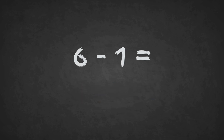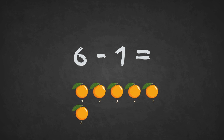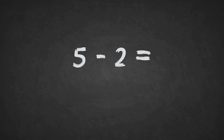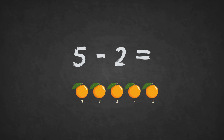6 minus 1 equals 1, 2, 3, 4, 5. The answer is 5. 5 minus 2 equals 1, 2, 3. The answer is 3.